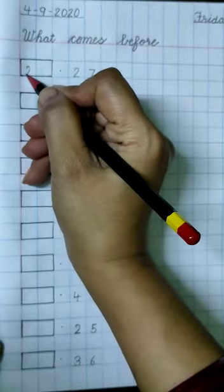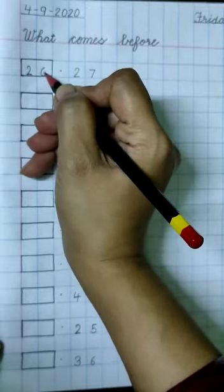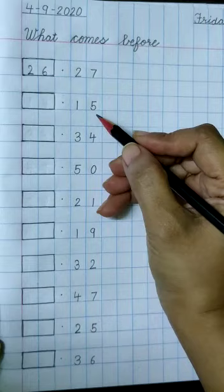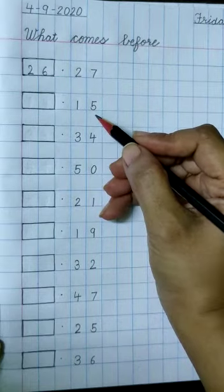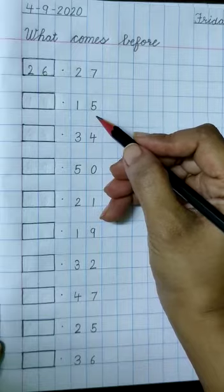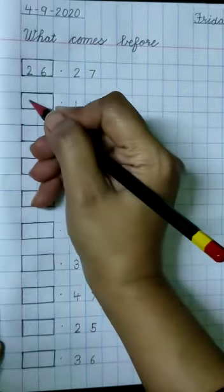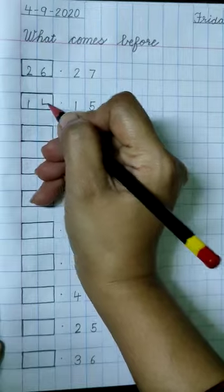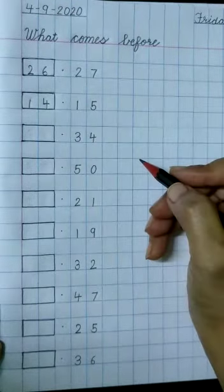So write 26 in this box. Our next number is 15. What comes before 15? 14, 15. 14 comes before 15. So write 1, 4, 14 in this box.